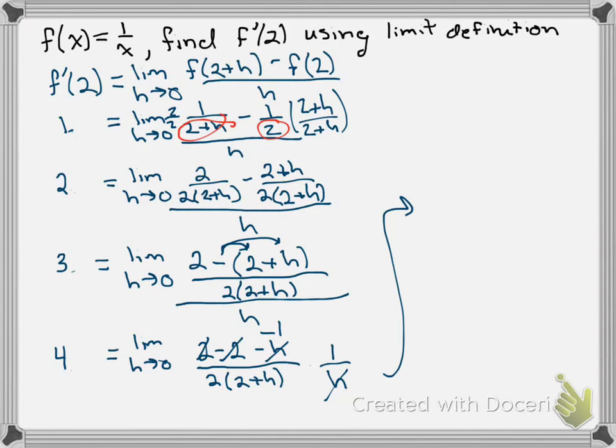So we're not going to take the limit just yet, so this is step 5. We have the limit as h approaches 0 of negative 1 over the quantity 2 times 2 plus h.